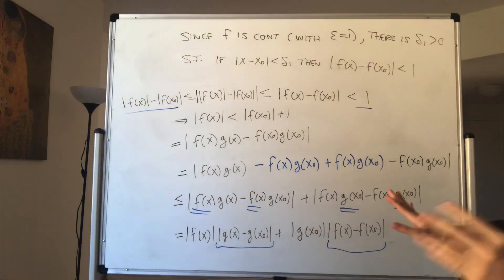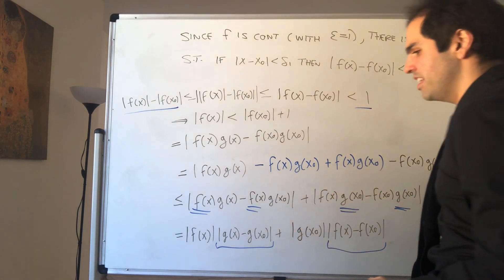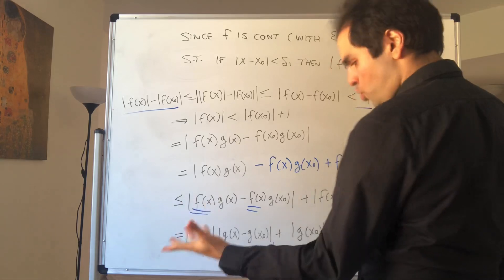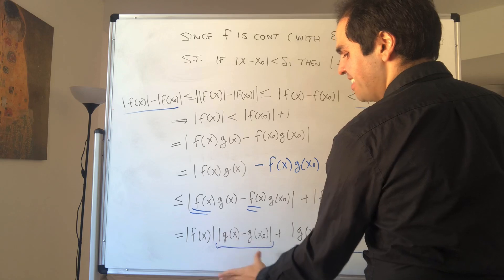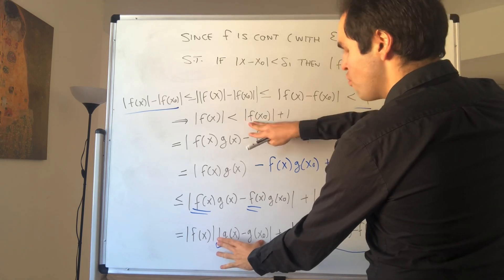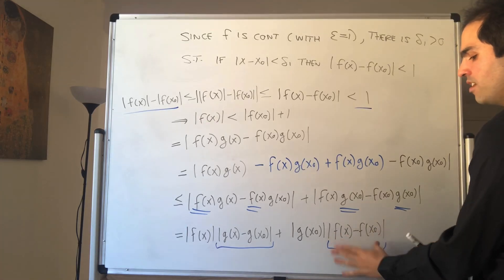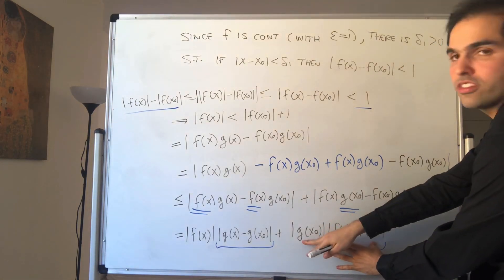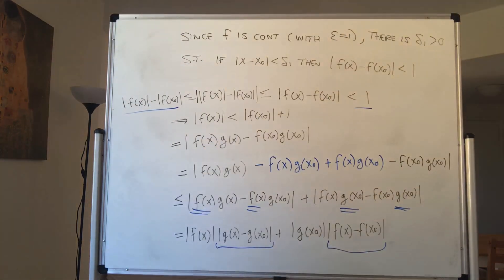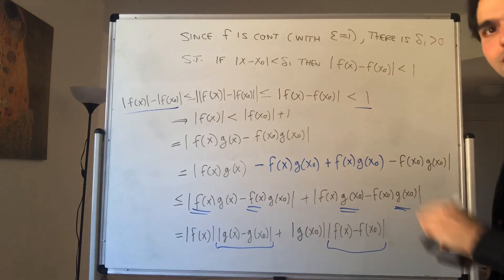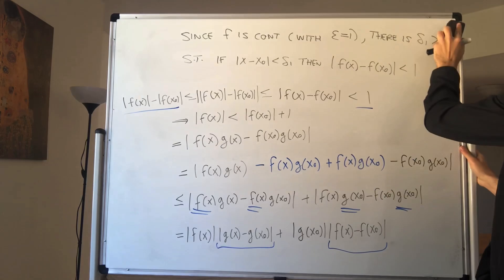That's very good, and this finally motivates our choices. Essentially we want to choose epsilon such that |g(x) - g(x₀)| is less than epsilon over the |f(x)| term, and also choose epsilon such that |f(x) - f(x₀)| is less than epsilon over the |g(x₀)| term. Now let's do the actual proof — that was just the scratch work.